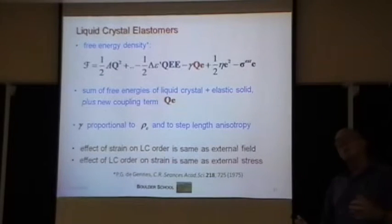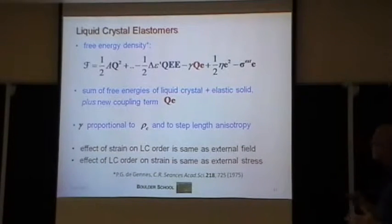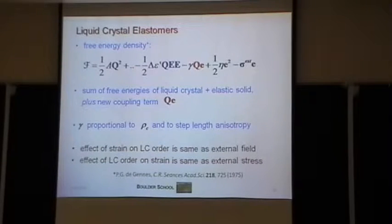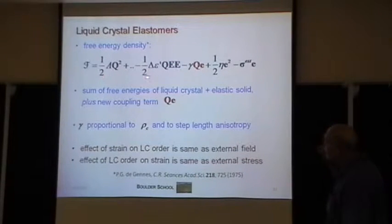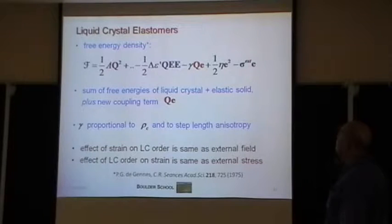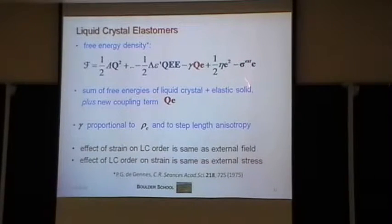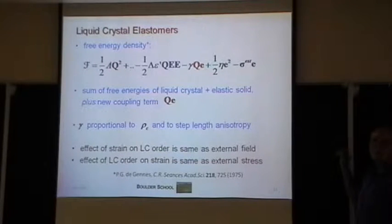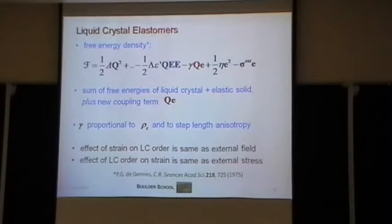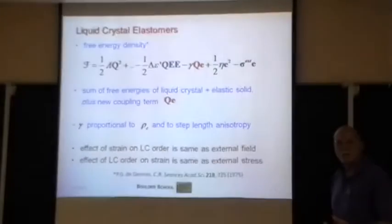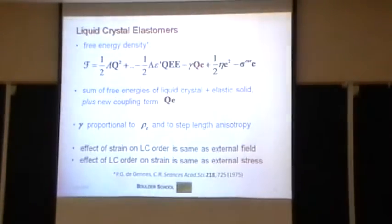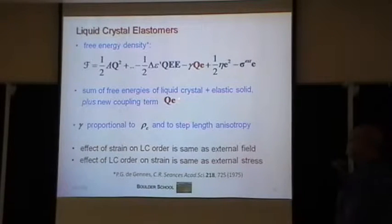Now let's put liquid crystals and elastomers together. This is what de Gennes originally proposed: take the liquid crystal free energy with all its terms, add the elastomer free energy, and include a coupling term. The simplest coupling is a scalar formed from the second-rank order parameter tensor and the second-rank strain tensor, with some coefficient out front. So the total free energy is the sum of the liquid crystal free energy, the elastic solid free energy, and this new coupling term.